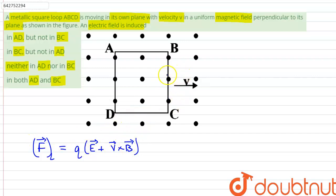Therefore, when this loop will move in its own plane, the electrons in AD and BC will experience a Lorentz force and they will move towards AB and DC, creating a potential difference between the rods AB and DC.